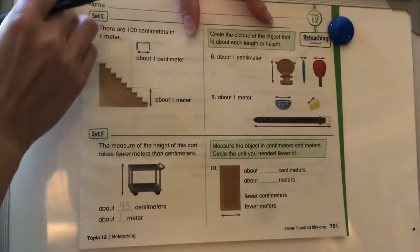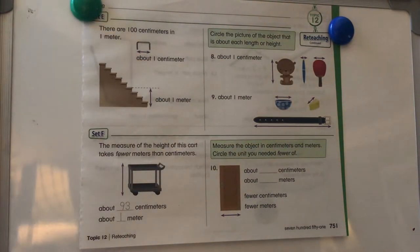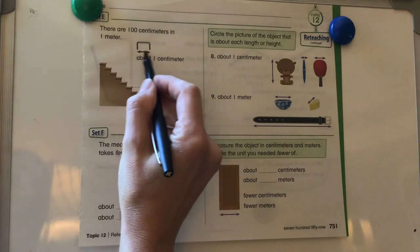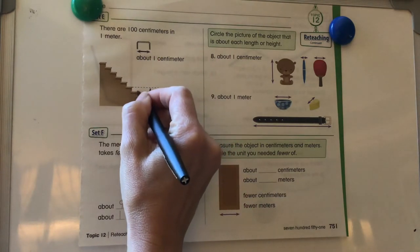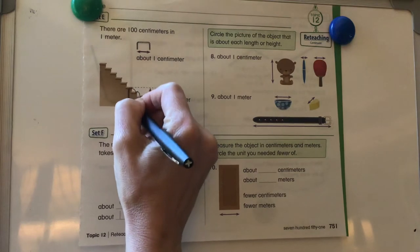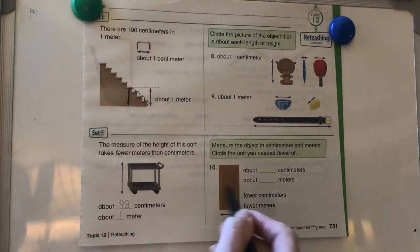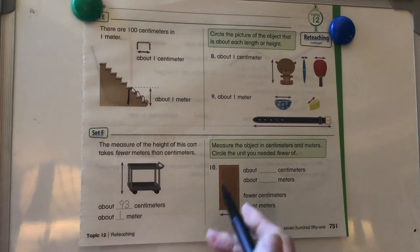It has a little teddy bear ping-pong paddle and a pen and a belt on it. So let's go ahead and take a look at this. There are 100 centimeters in a meter. This is about one centimeter and a meter is about as tall as one, two, three, four steps. It's about how tall a meter is. I like the meter is about halfway up the door, about from the bottom of the door to the door handle is about a meter.